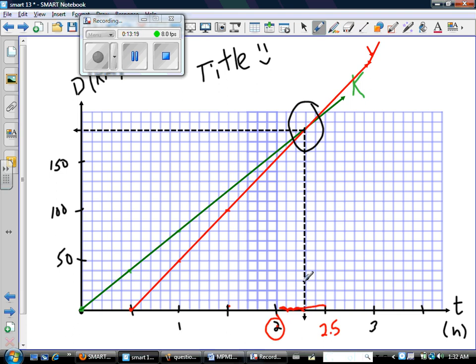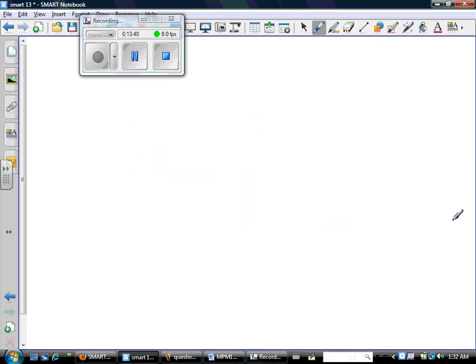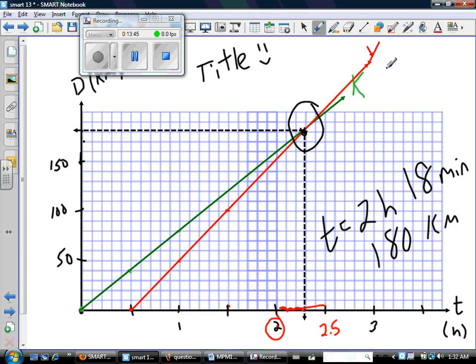So time, the time that Yvette caught up was at two hours and 18 minutes. And how far had they traveled? 150, 160, 170, 180 kilometers. So the intersection right here is the point two hours, 18 minutes. And that's 180 kilometers.